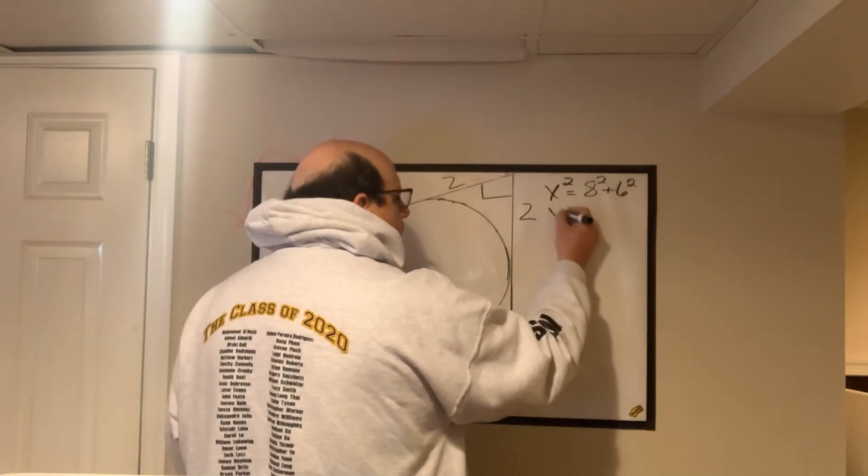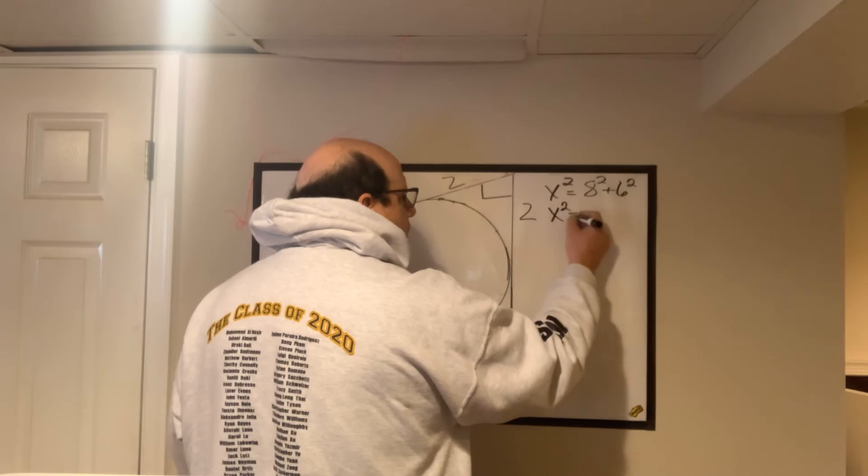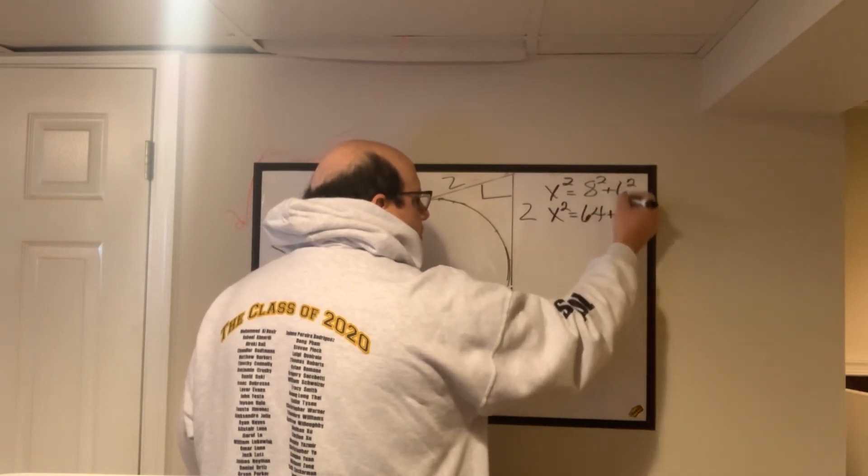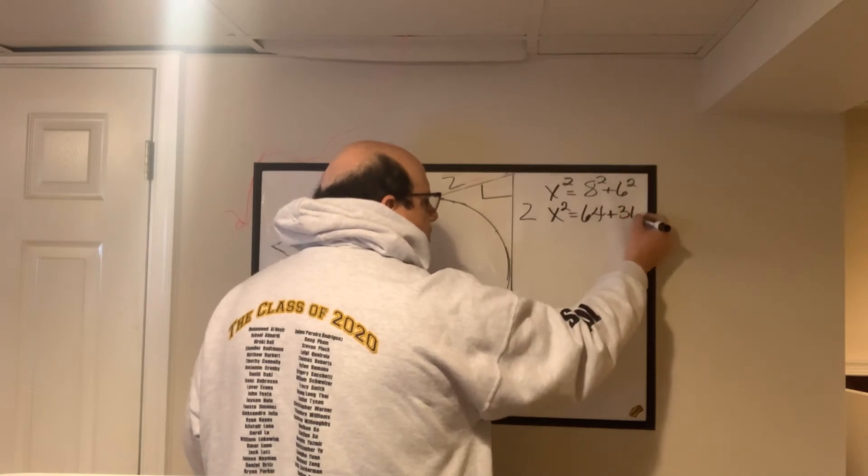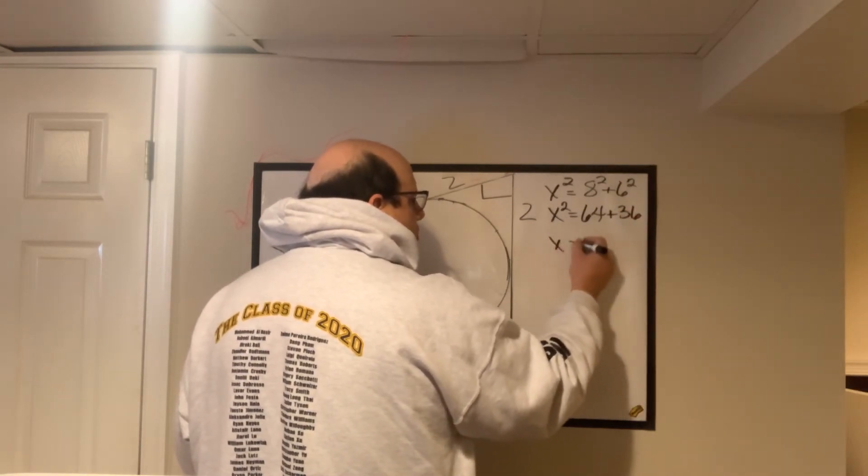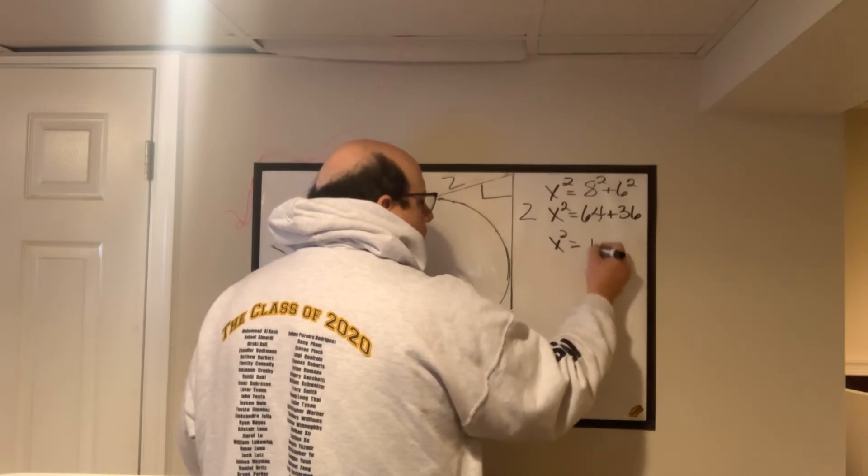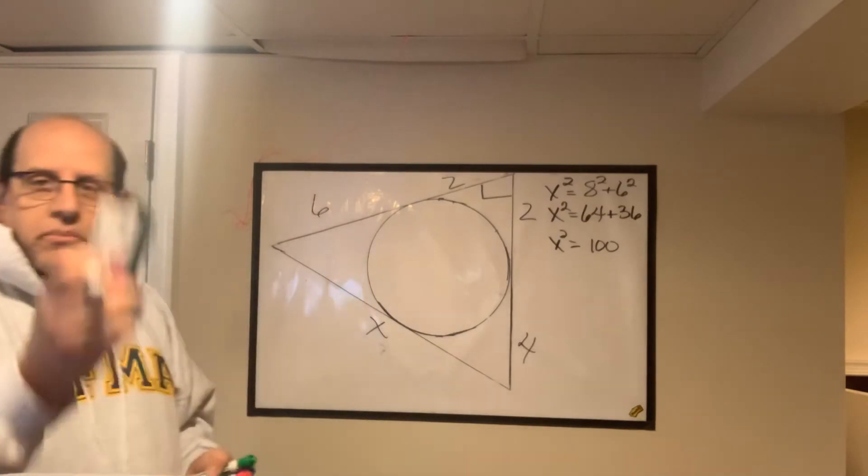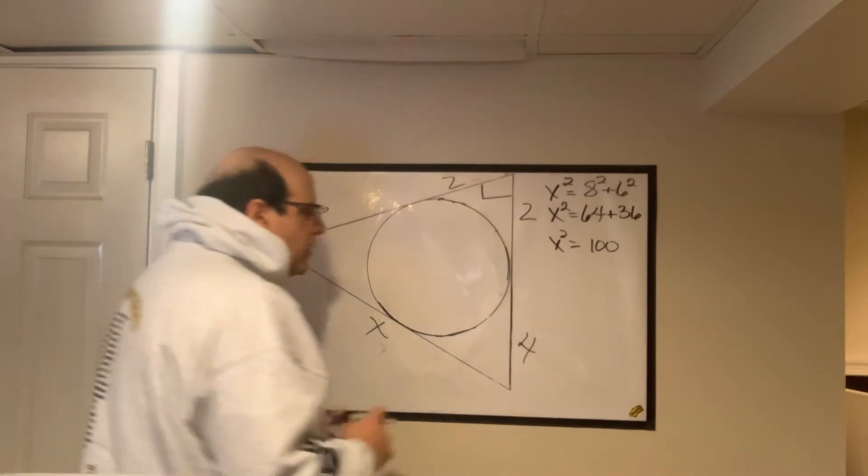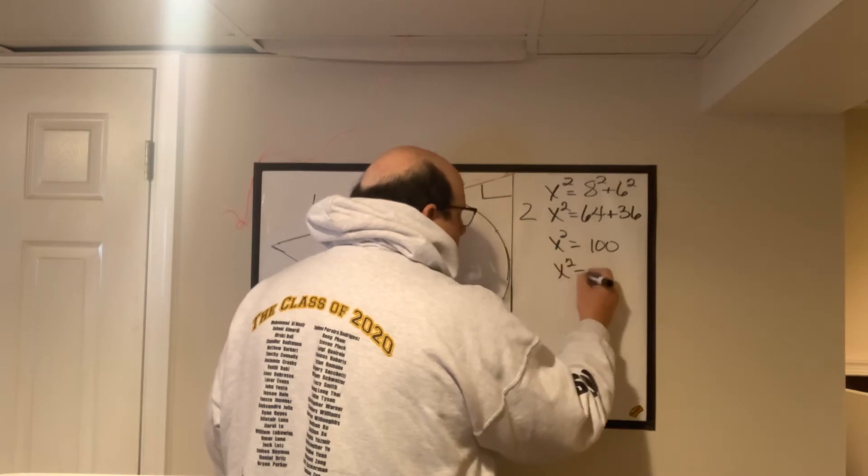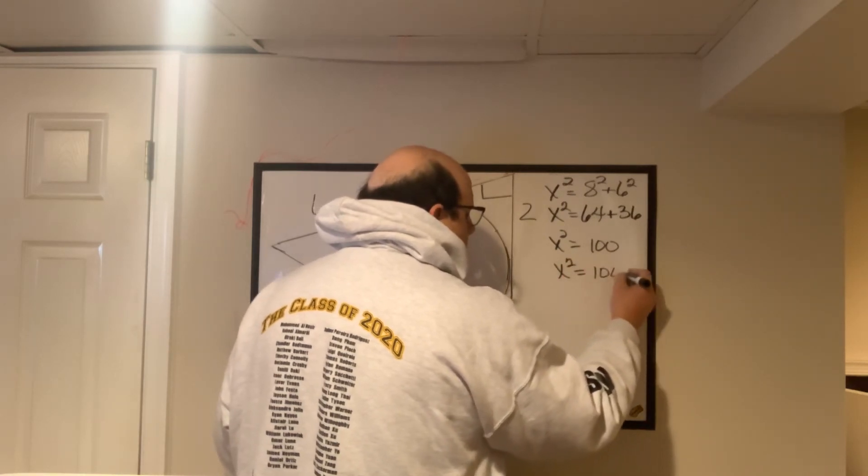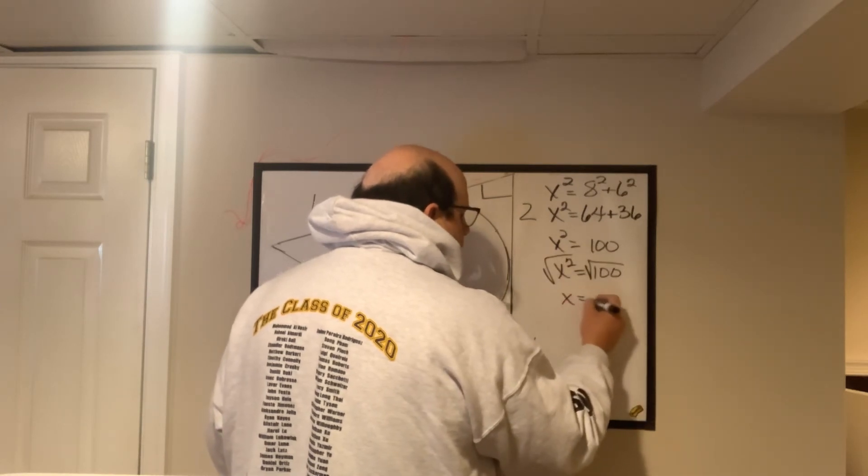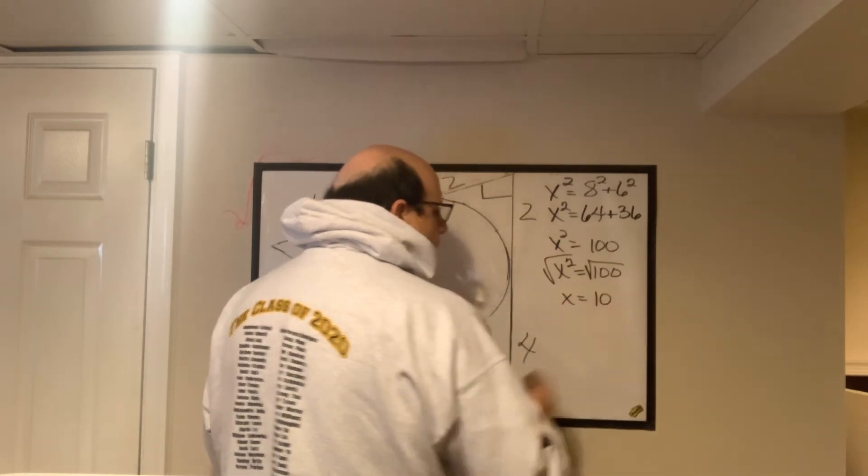You'll just say, x squared equals 8 times 8 is 64, plus 6 times 6 is 36. And we'll add those together. We'll say x squared equals 100. And look at that. That's one of those perfect squares that everybody knows by heart. But I'm still going to rewrite it just because I'm a mean math teacher. And we force you to rewrite and do the math on that one. And we all know that x equals 10.